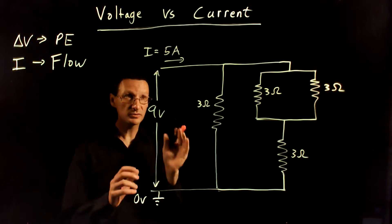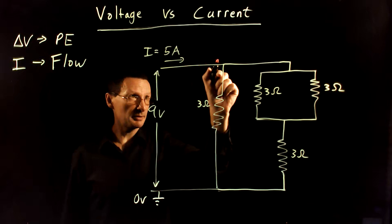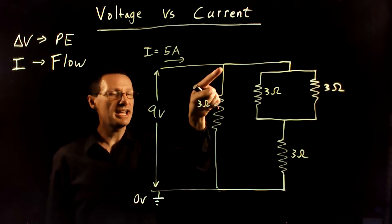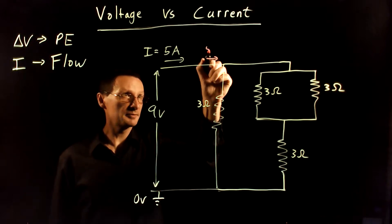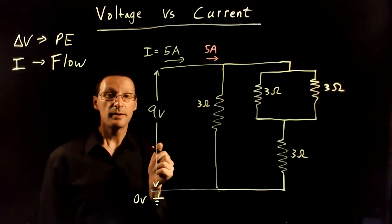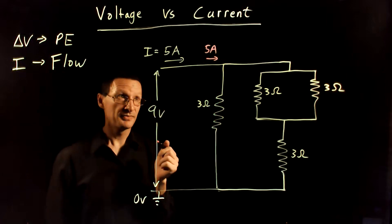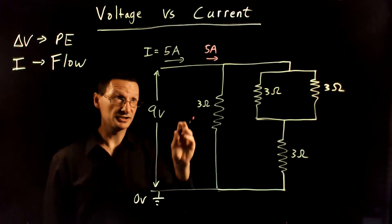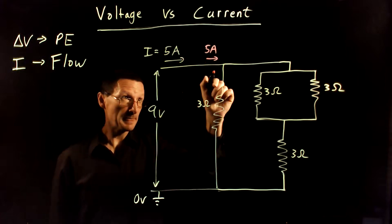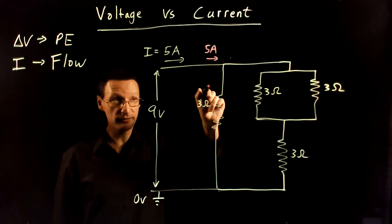So we just want to talk about current for right now. What happens when the current comes to this junction here? Well, if we have five amps coming in, the principle here is that current is closely related to flow. If we have five amps of flow coming in, you can think of it as five charges coming into that junction.